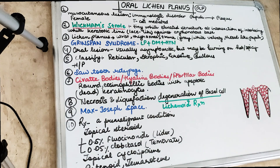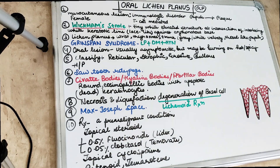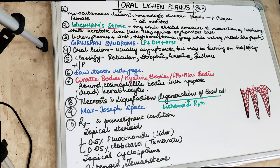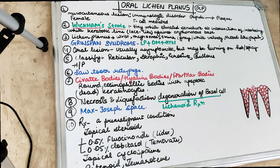Oral lichen planus is a mucocutaneous lesion and the cause is immunologic — it is T-cell mediated. It is believed that there is an abnormal recognition of the basal keratinocytes of the epithelium as a foreign antigen by the Langerhans cells. Since they recognize them as an antigen, they start killing these cells via MHC-mediated mechanisms, leading to degeneration of the basal layer of the epithelium — we call this the lichenoid reaction.